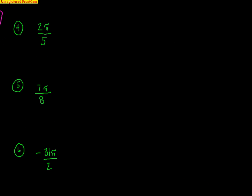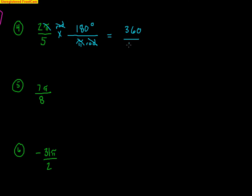Now let's convert from radians to degrees. This time I multiply by my conversion factor with π radians on the bottom to cancel and 180 degrees on top. For 2π over 5: the radians cancel and the π's cancel too. I get 2 times 180 on top, which is 360, divided by 5 on the bottom. 360 divided by 5 gives 72 degrees. So 2π over 5 equals 72 degrees.